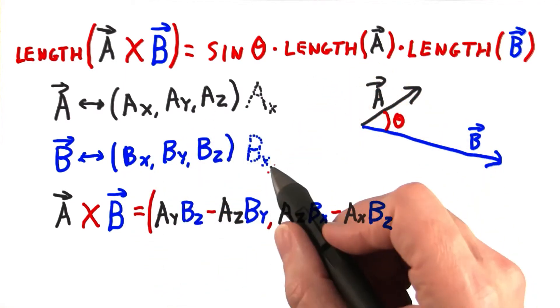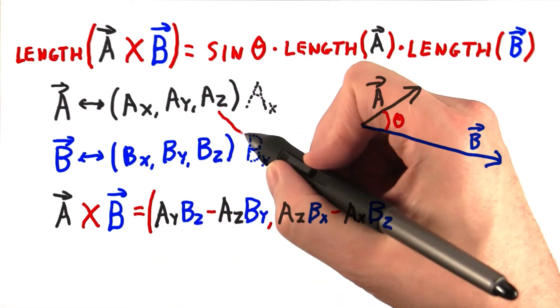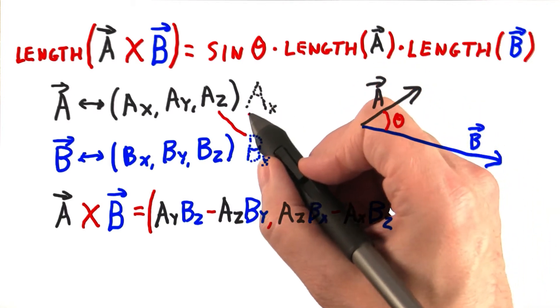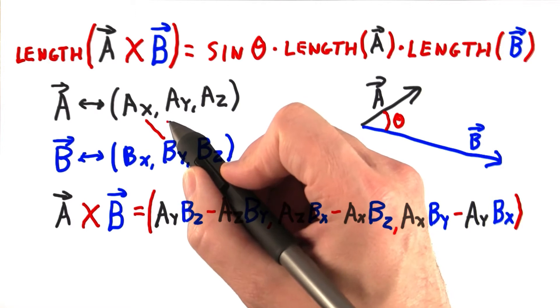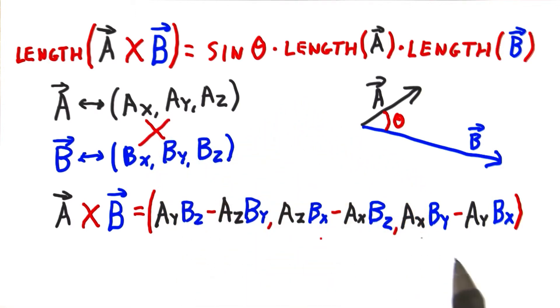So, I tend to take this and wrap it around to this side, so it's az times bx, and ax times bz. For the last coordinate, we do the same thing, ax times by minus ay times bx.